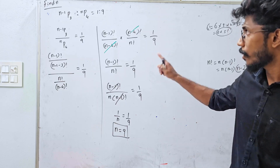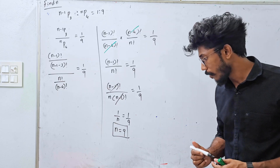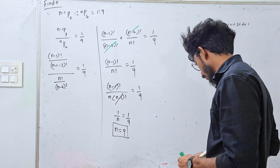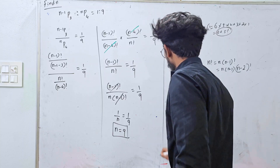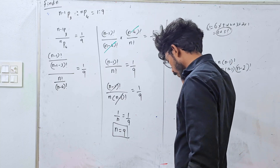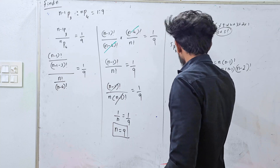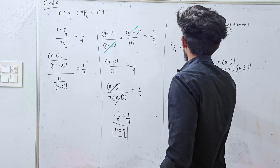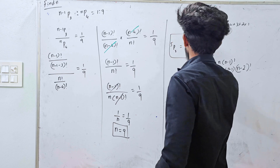This is a very important question. You will learn something here. The next important question involves 5Pr equal to 6Pr-1.